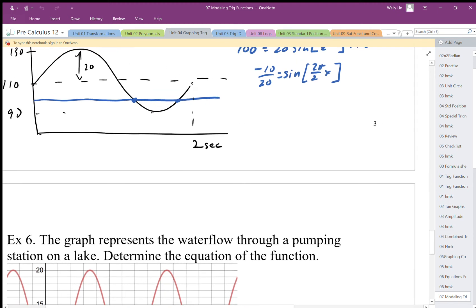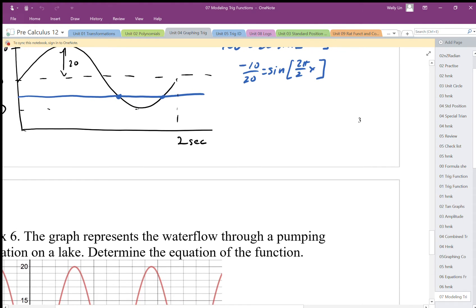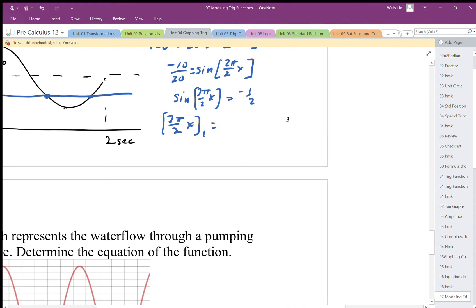Finishing up that last problem, we're going to end up with sine theta equals a special angle. So 2π over 2x equals negative 1/2. Solving for theta, we end up with 2π over 2x. We'll call that theta 1, where sine equals negative 1/2.